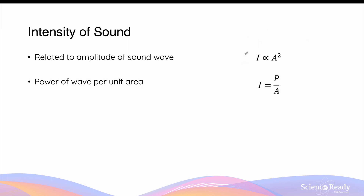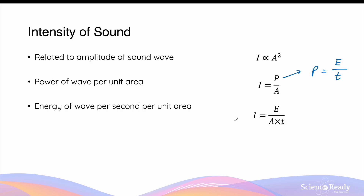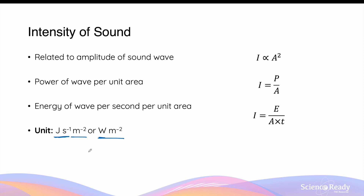The alternative definition of intensity is the power of the wave per unit area, calculated by dividing the power P by the area over which the sound wave is incident. Power is the rate of energy transfer over time — how many joules of energy are transferred from one location to another every second. So intensity also equals the energy of the wave transferred per second per unit area: I = E / (A × t). The unit of intensity is joules per second per meter squared, or equivalently watts per meter squared.